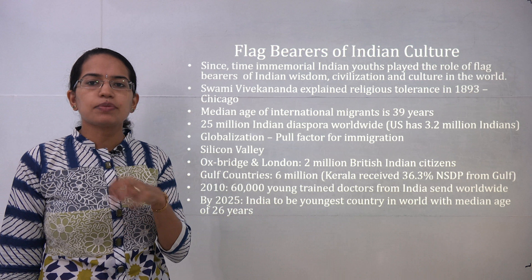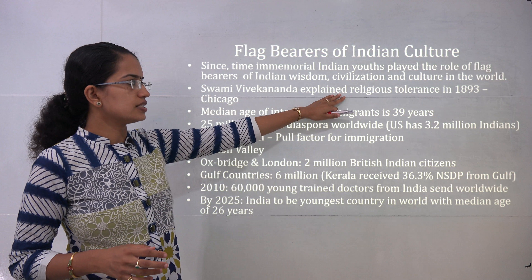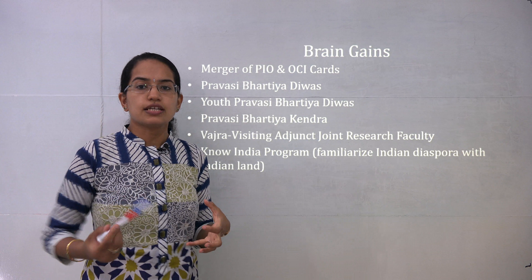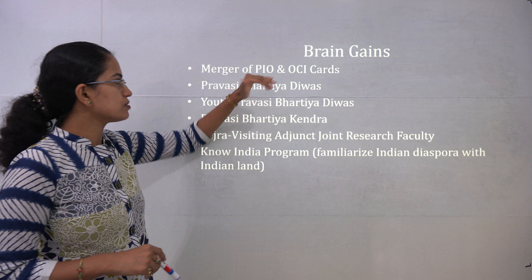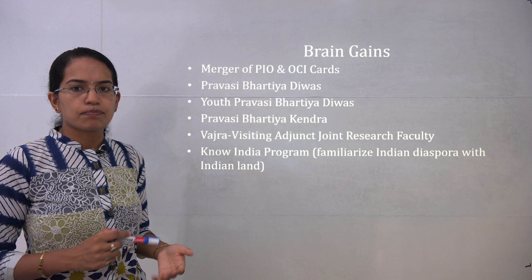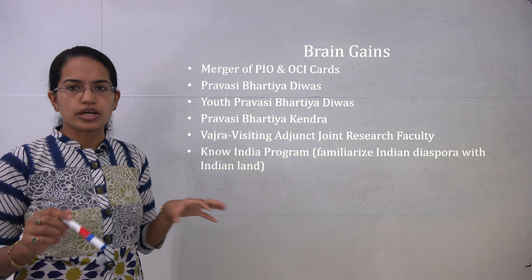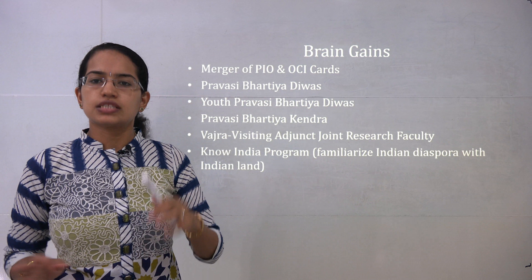Skilled people are going to Silicon Valley in the US and to Oxbridge and London, where there are 2 million British Indian citizens. Globalization is a pull factor attracting more immigration. Swami Vivekananda explained the ideas of religious tolerance at his Chicago summit. Brain gains include the merger of the PIO and OCI cards, conducting Pravasi Bharatiya Divas, Youth Pravasi Bharatiya Divas, the Pravasi Bharatiya Kendra, the Vajra visiting adjunct joint research faculty programme, and the Know India Program that familiarises the Indian diaspora with Indian culture.